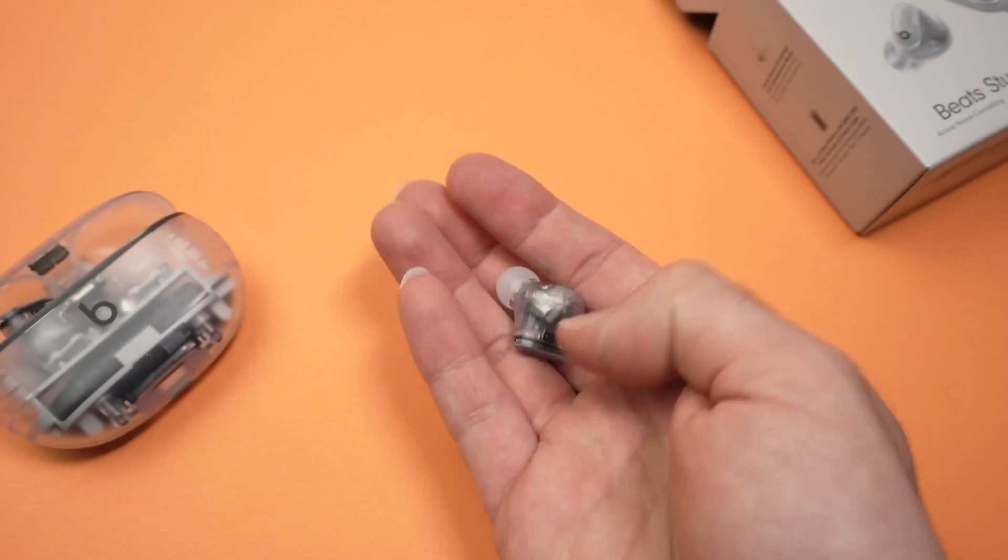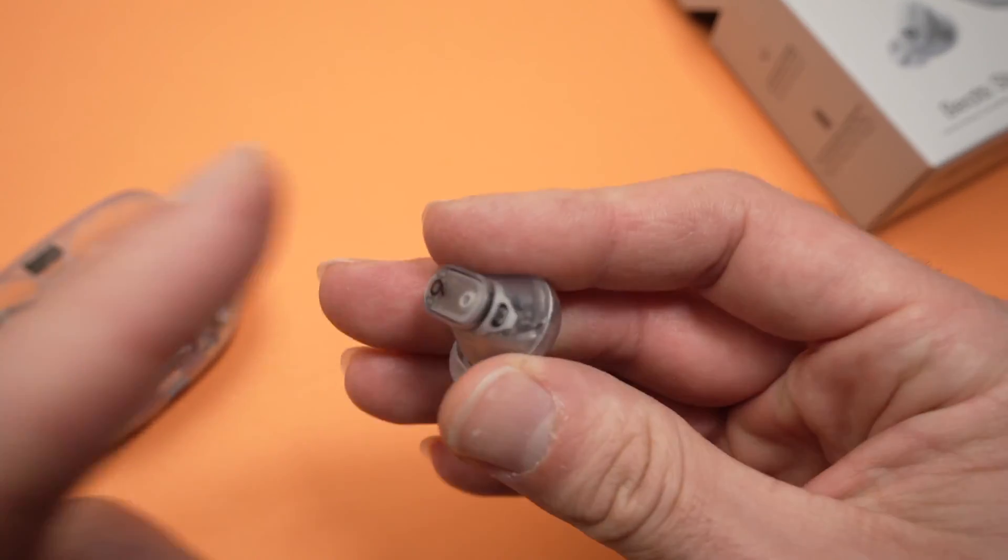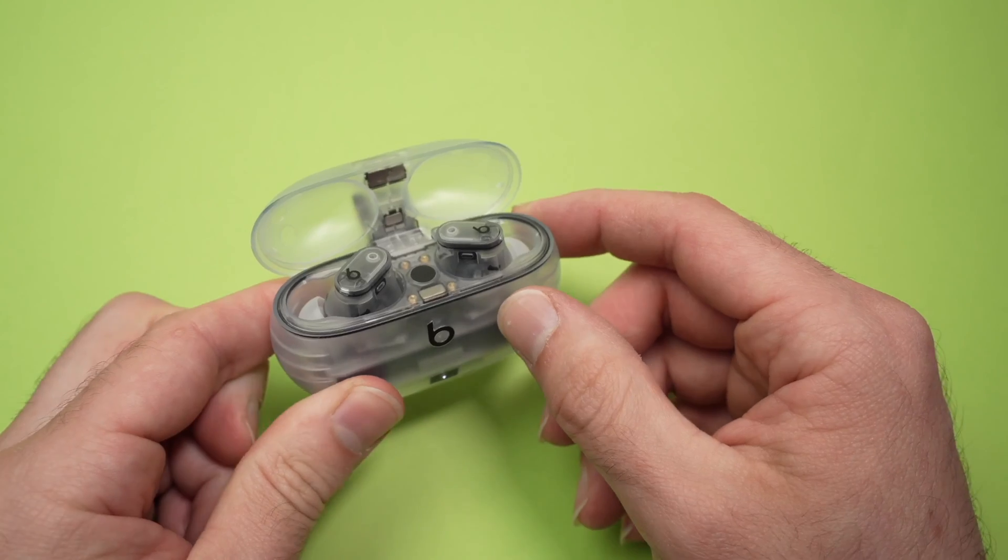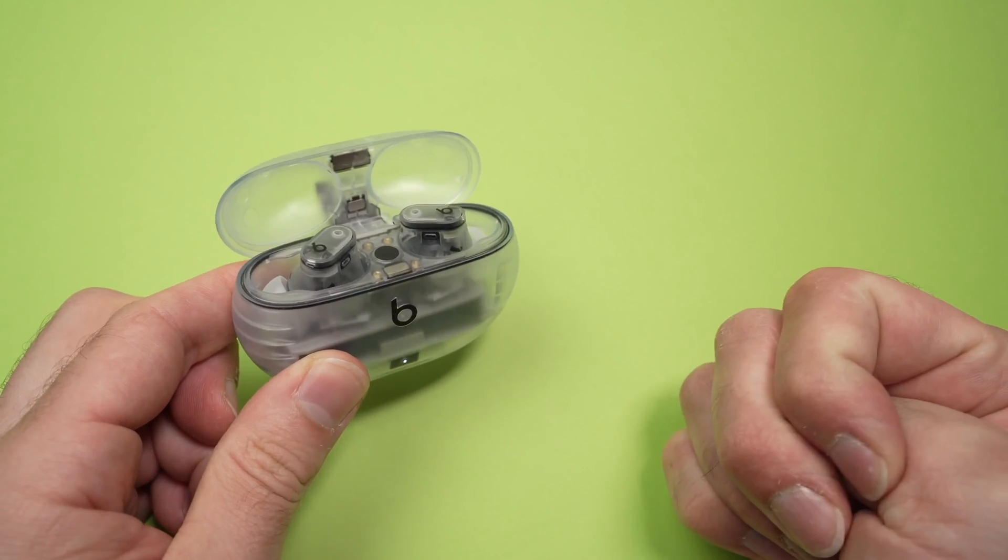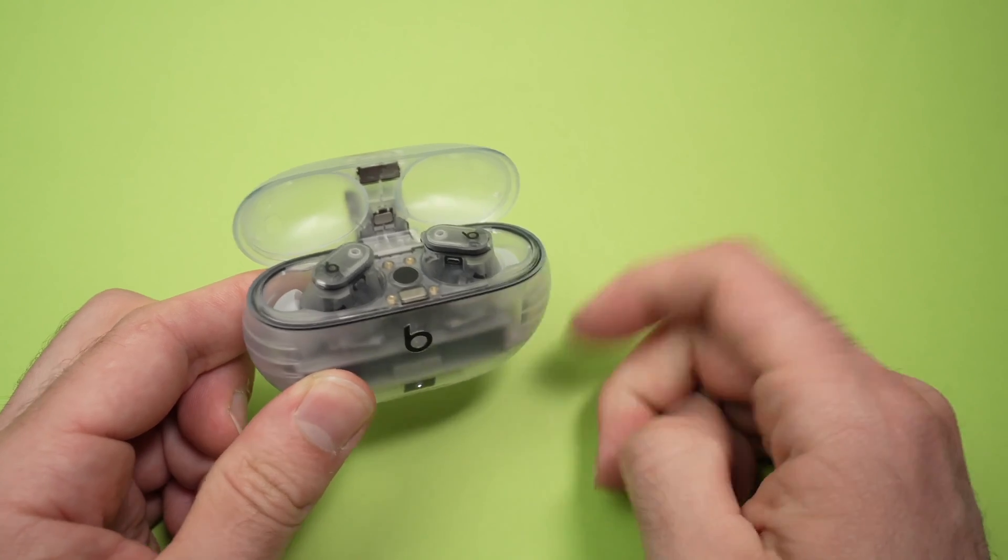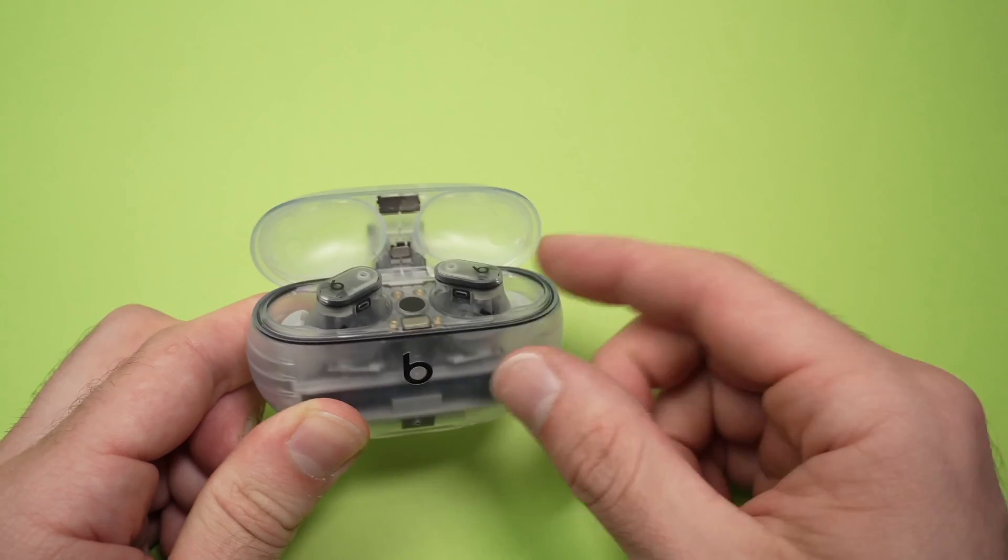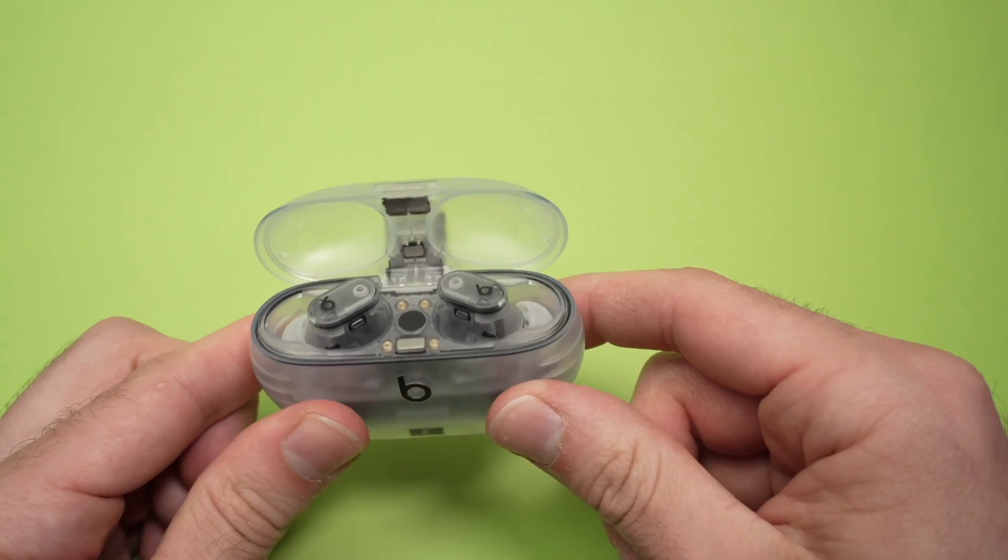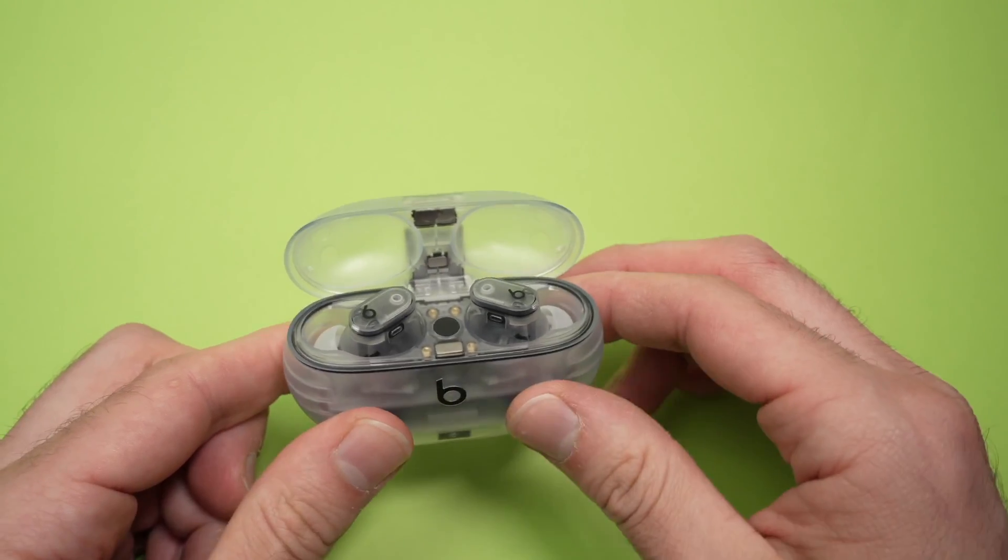Now how do you change the actual volume on this because they don't have any volume buttons, right? Well, let me show you. There's actually four different ways on how you can do this. And some of these modes are not enabled when you get them out of the box. You need to enable it on the phone. So let me show you what I'm talking about.